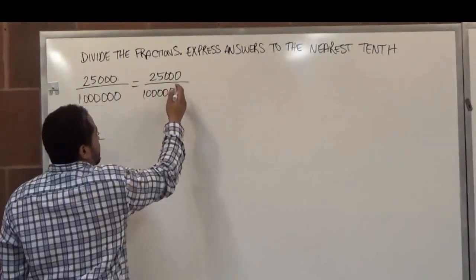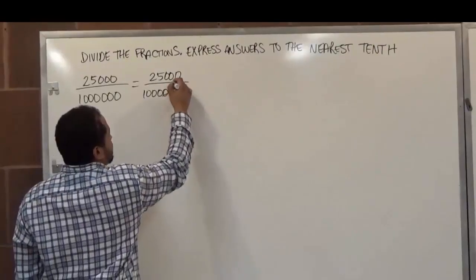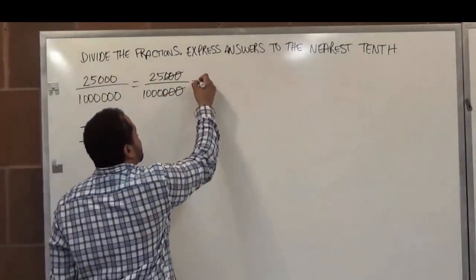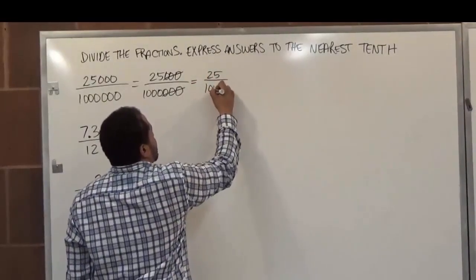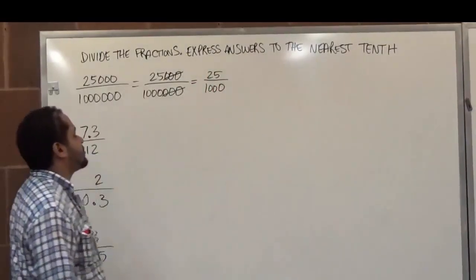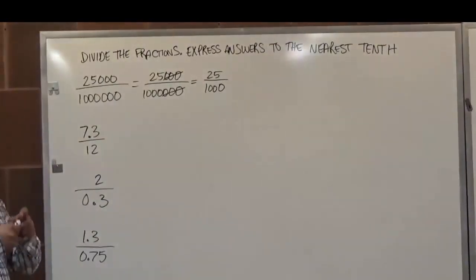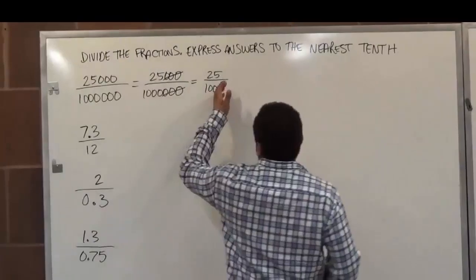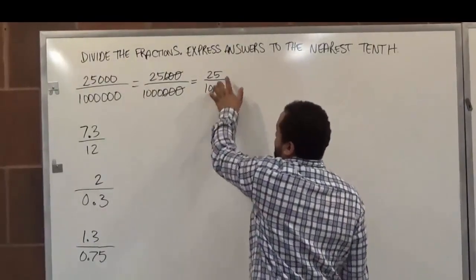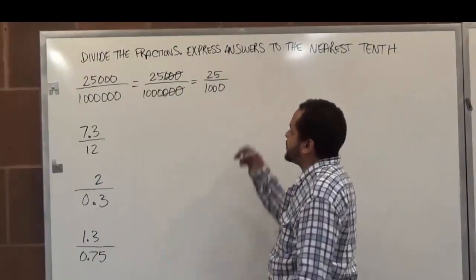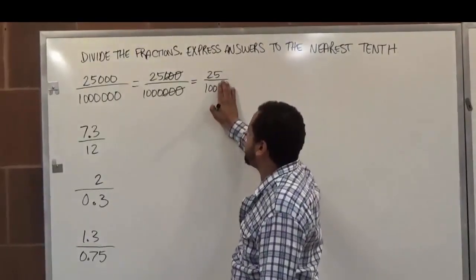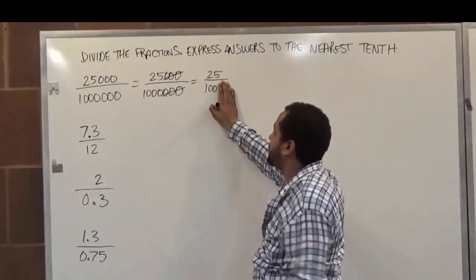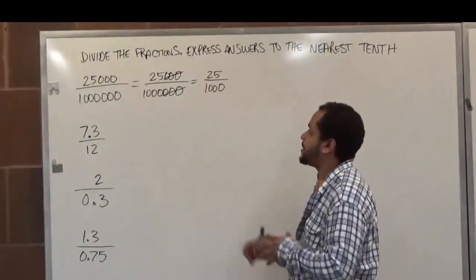Here we see they have three zeros in common, so we're going to strike three zeros out with each set. Now what we have left is twenty-five over a thousand. Now twenty-five and a thousand have a lot in common. We know that twenty-five times one gives us twenty-five, and a thousand is actually a multiple of twenty-five. Because if we just take out one zero, we know that four times twenty-five is a hundred. But forty times twenty-five would be a thousand.